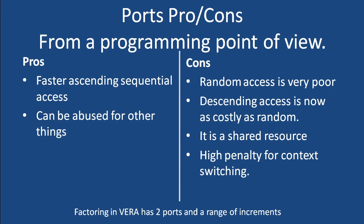The cons, however: random access is very poor, because now you have to go through and set the entire address space to the port, then read, then set it up all again, and then read. Before, you could just use an index and jump around within 256 very easily — you can't anymore. You still have to modify things directly. Descending access is now as costly as random; there is no acceleration or benefit for descending.